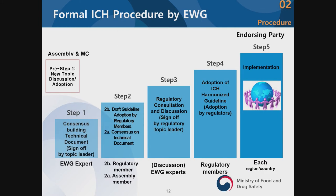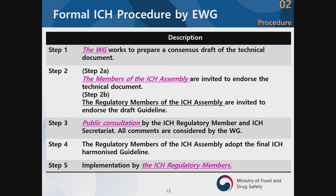This is the well-known process of guideline development from step 1 to step 5. EWG leads these steps. From step 1, the draft technical document is prepared by the EWG. At step 2, there are two sub-steps: in step 2a, the ICH assembly members decide whether to endorse the technical document, and in step 2b, the regulatory members endorse the draft guideline. At step 3, there is public consultation where comments and feedback are collected. Steps 4 and 5 are the decision-making steps.